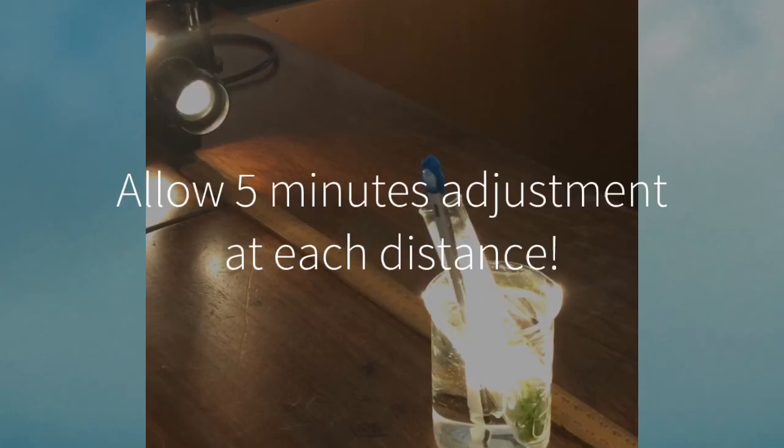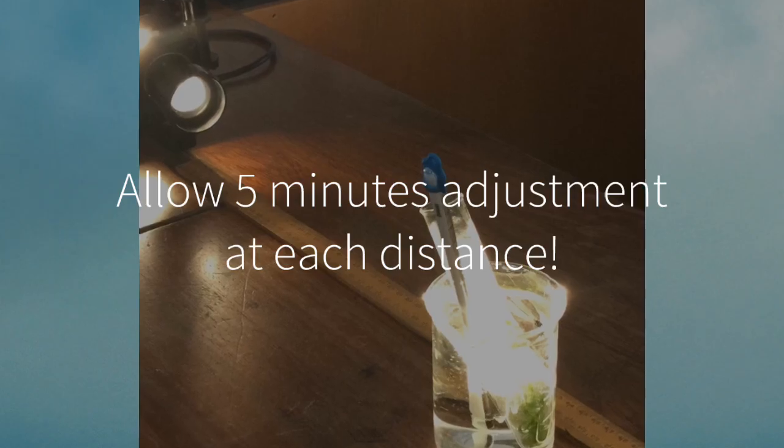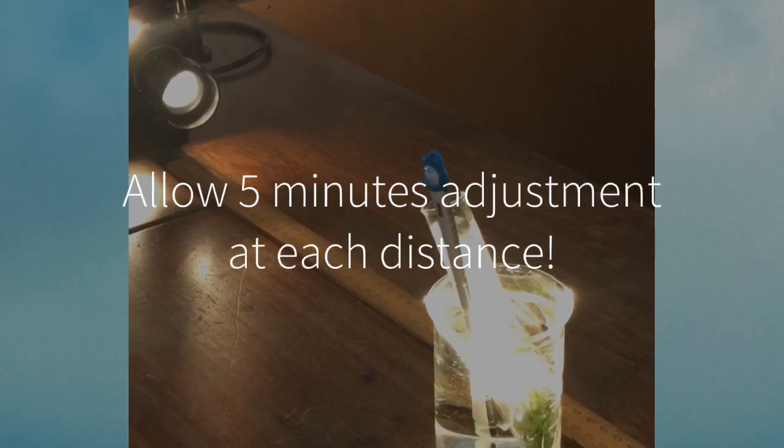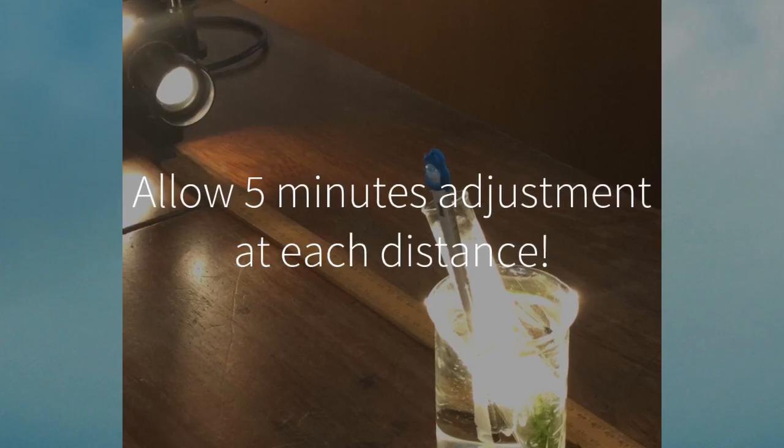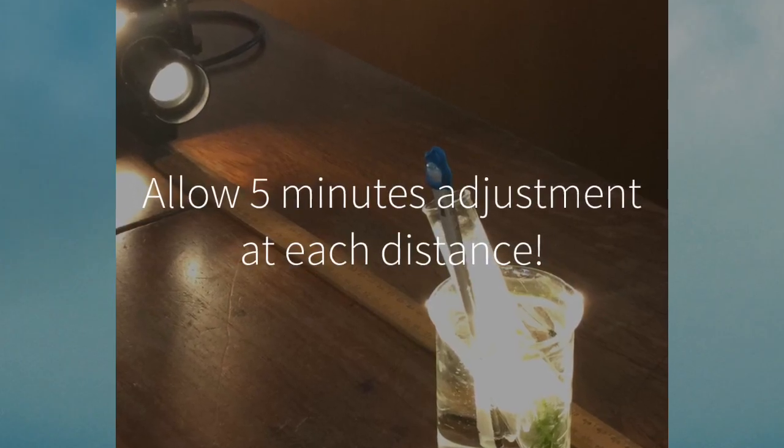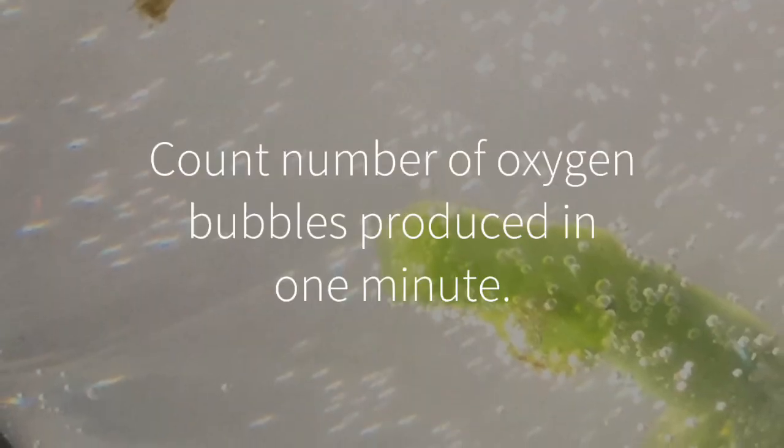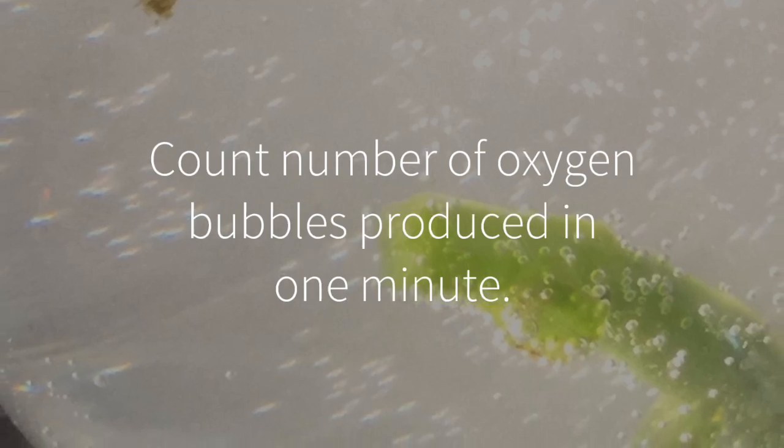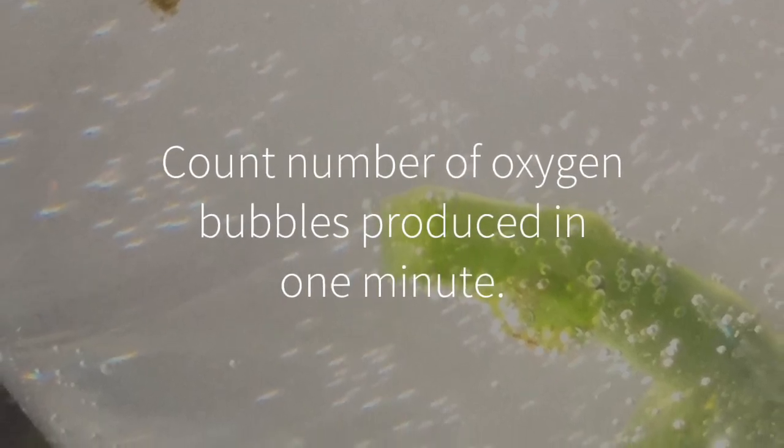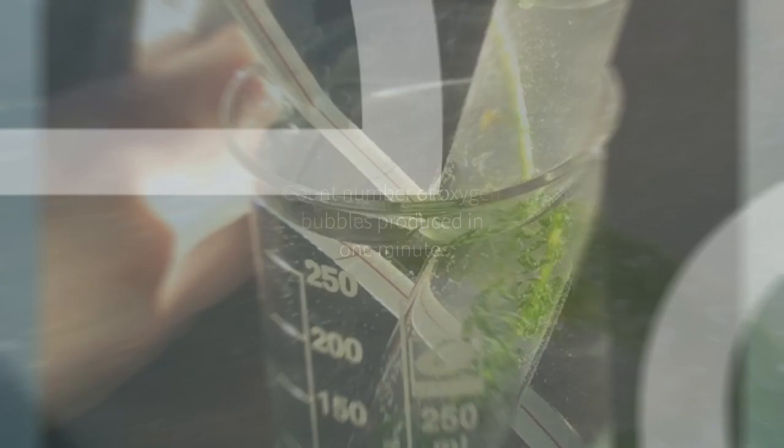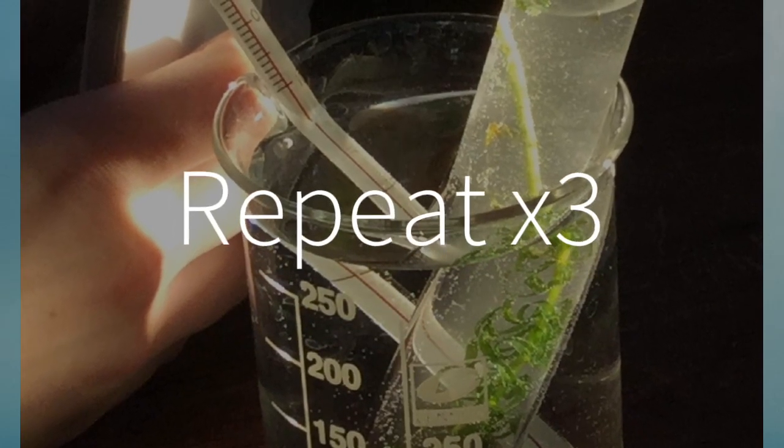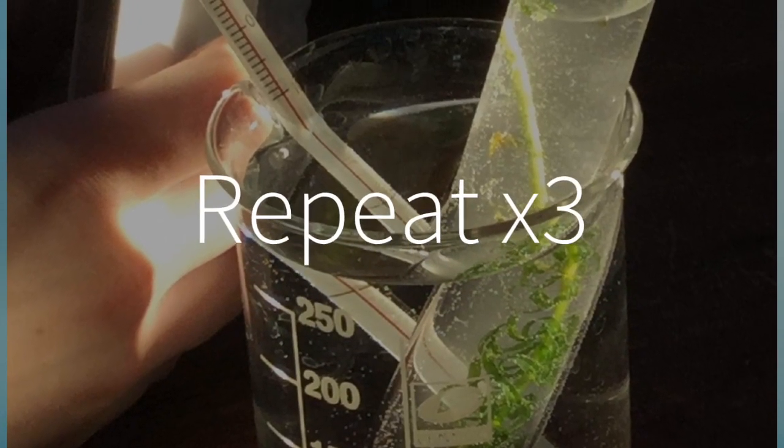It is most important that you state that you allowed the allodea to adjust for five minutes to the new light intensity each time you moved it before you started counting the bubbles. After the five minute adjustment period, we started to count the number of oxygen bubbles that were released in one minute. This was repeated three times for each of the light intensities and the average was calculated.